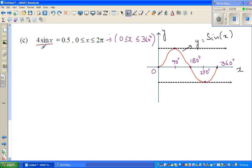If I divide both sides by 4, sine x equals 0.5 divided by 4. Half of 0.5 is 0.25, so this is 0.125. First I'll explain it graphically, then I'll do it on a graphic calculator.